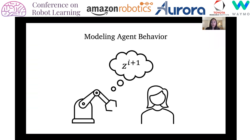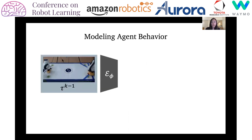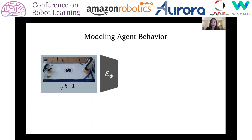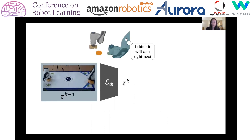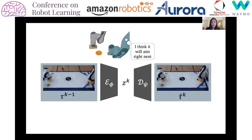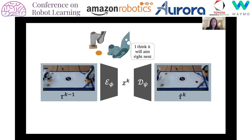To allow the robot to adapt to the other agent, our approach first learns a representation of the other agent's behavior. To learn this from data, we train an encoder that takes in the previous interaction and predicts the next interaction's leading strategy. We also train a decoder, which reconstructs this next interaction.